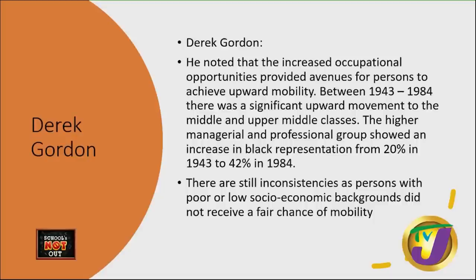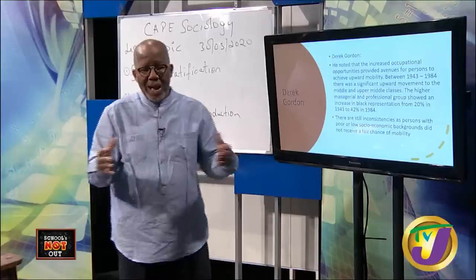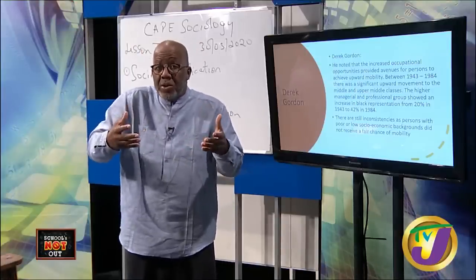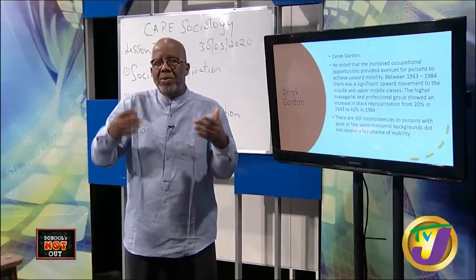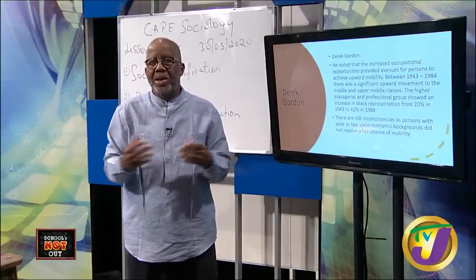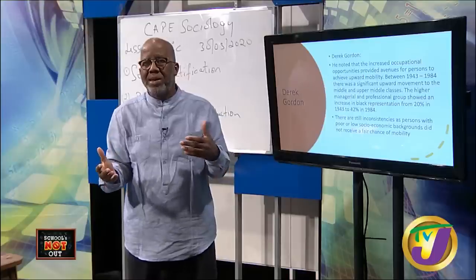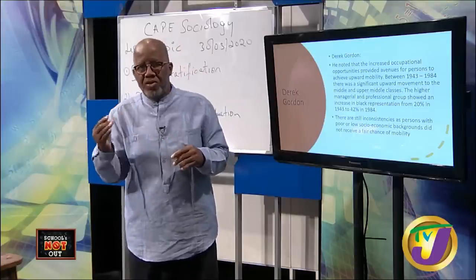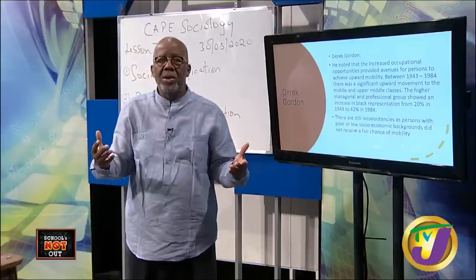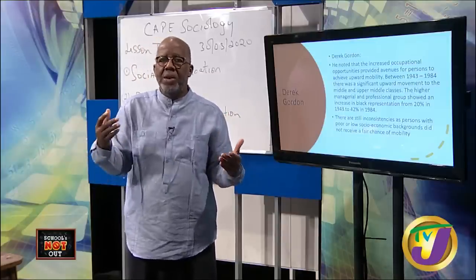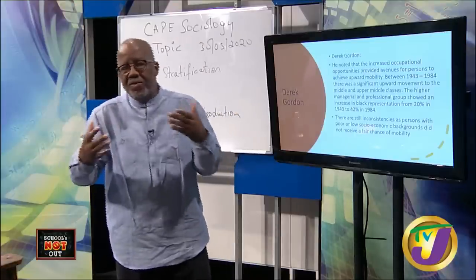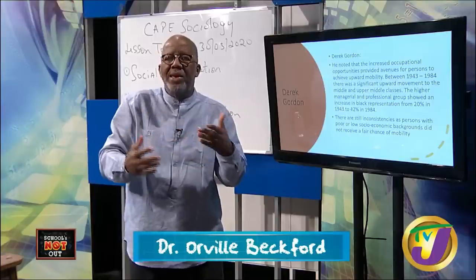According to Derek Gordon, a university sociologist, between 1943 and 1984 there was significant upward movement to the middle and upper classes. The higher managerial and professional group showed an increase in black representation from 20% in 1943 to 42% in 1984. As education opportunities became more available to lower-class blacks, they could move into the middle class. Education doesn't guarantee social mobility but gives you the opportunity for it — which is why we say to students: stay in school.